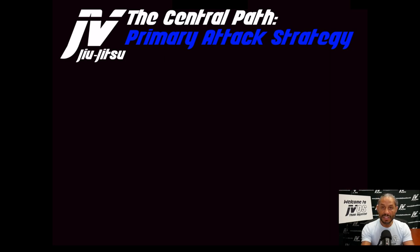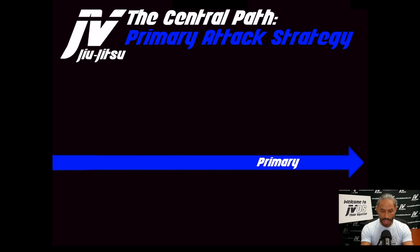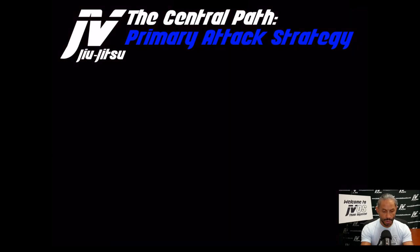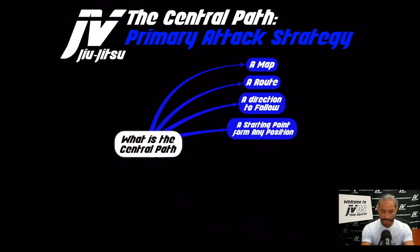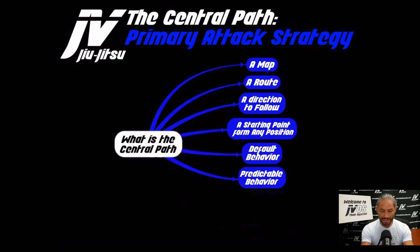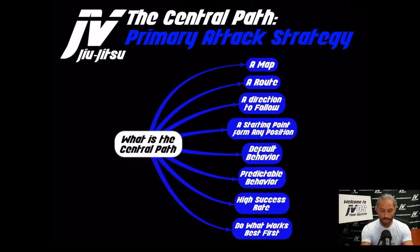The central path is my primary attack strategy. The blue line signifies motion over time. The central path is a map, a route, a direction to follow — a starting point from any position. It is your default behavior. It is predictable behavior, it has a high success rate, and we do what works best first.